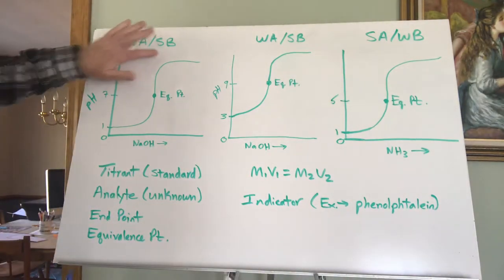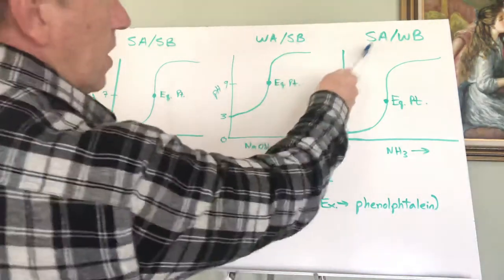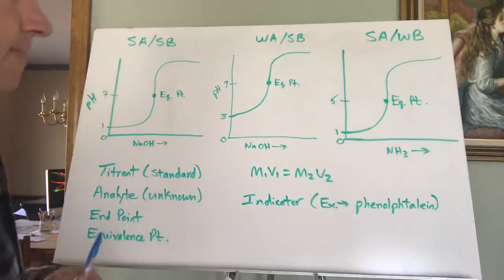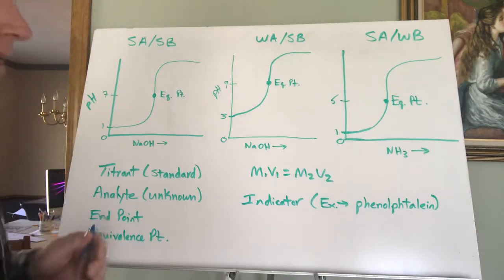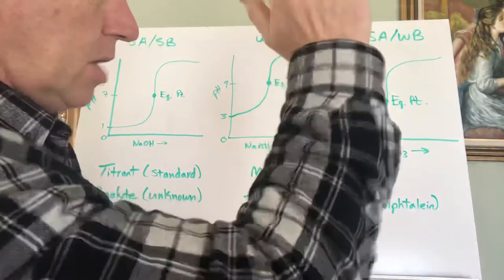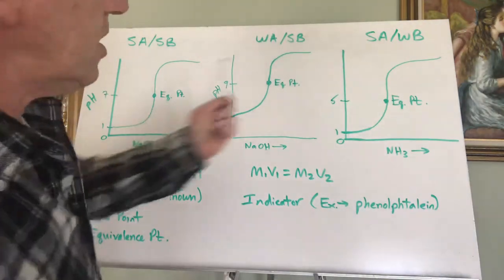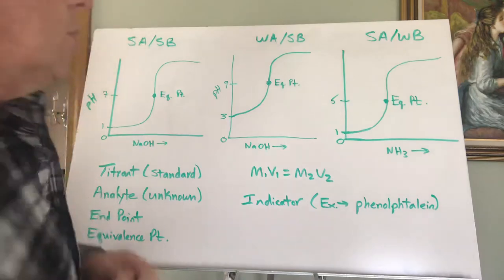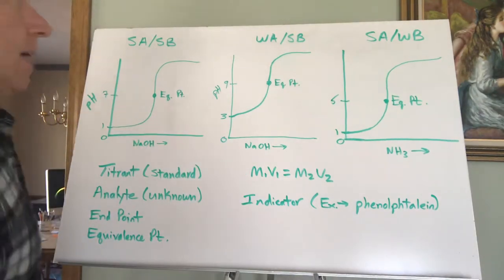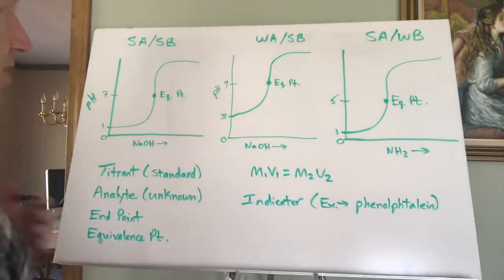The first curve deals with a strong acid and strong base, the second with a weak acid and strong base, and the third with a strong acid and weak base. Some might ask about a weak acid and weak base combination — we could do that, but we don't cover it in this course, so we'll stick with these three combinations.